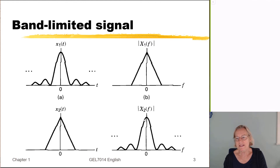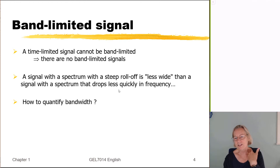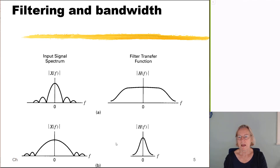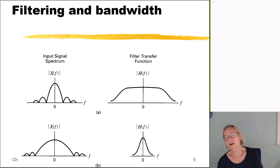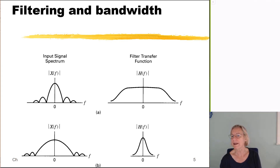A steeper roll-off would be less wide than one that drops off less quickly. So how can I use this concept to quantify bandwidth, even for signals that aren't strictly band-limited? Beyond the signal bandwidth, there is also the bandwidth of a channel, and in communications that concept of bandwidth is really critical to our analysis.